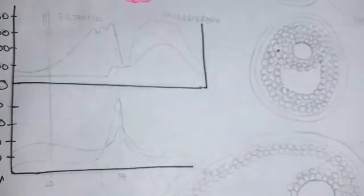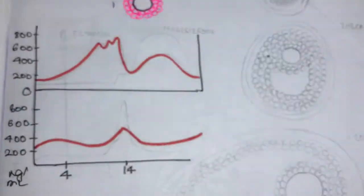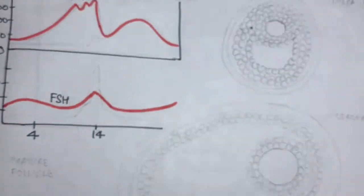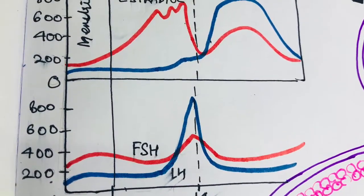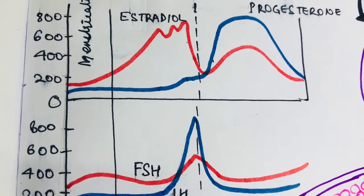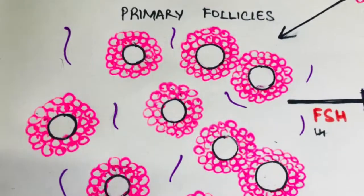Both FSH and LH secreted by the anterior pituitary rise slightly to moderately, and due to this rise, especially FSH, we see accelerated growth of only six to twelve primary follicles out of the four hundred thousand.